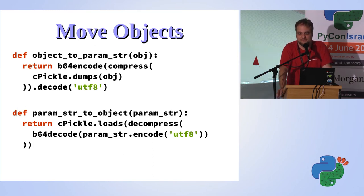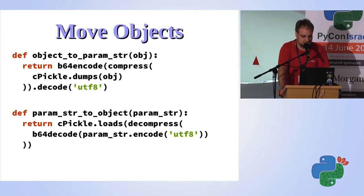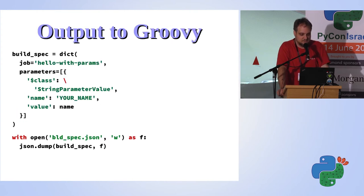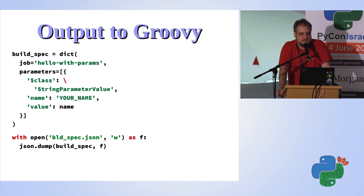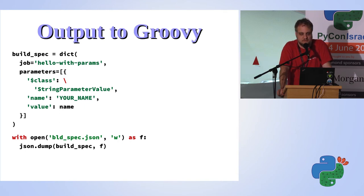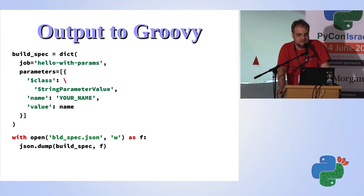So we've got a write function and a read function — pretty simple. One nice thing about the pipeline style of jobs is that in Groovy, function parameters can be mapping objects, which are essentially the same as dicts in Python. So one thing you can do is generate all the parameters that the Groovy function needs as a Python dict, save it to JSON, and read it back from Groovy.